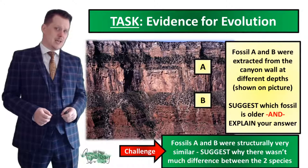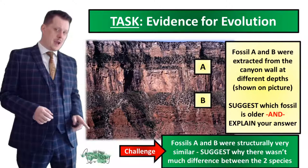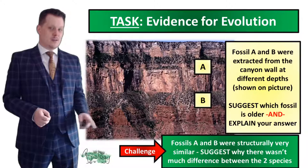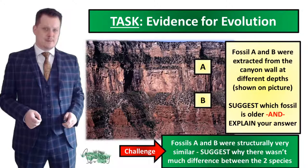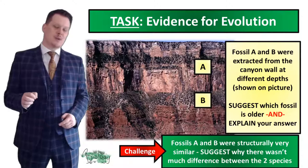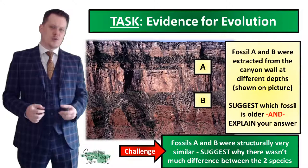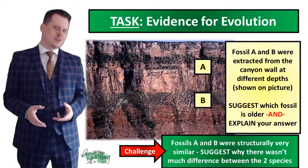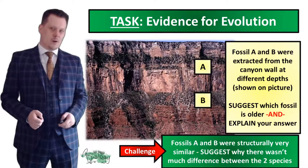We're going to do a task which allows us to assess which fossil is likely to be the oldest. Here we have the wall of the Grand Canyon, and two fossils have been extracted from it. Fossil A was taken from near the top and fossil B from deeper down. Suggest which fossil is older and explain your answer. As an extra challenge: fossils A and B were structurally very similar — suggest why there wasn't much difference between the two species, i.e. why was there not much evolution over such a long period of time?